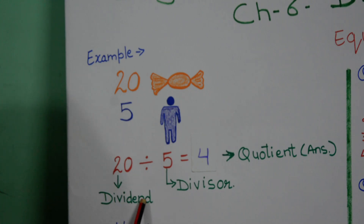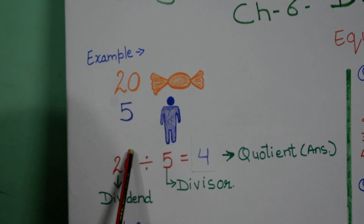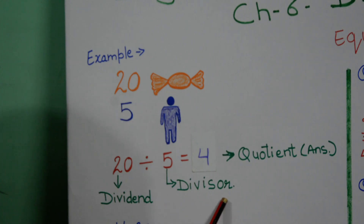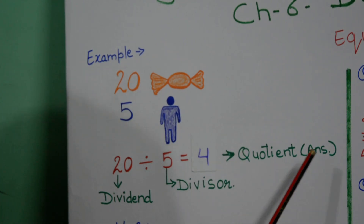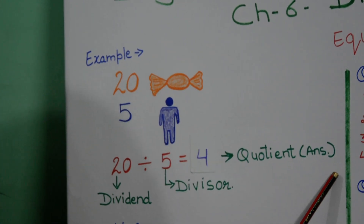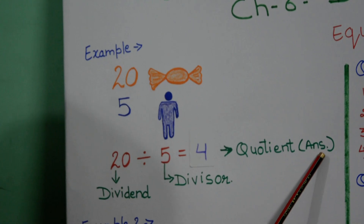They are called dividend because you are dividing them. 5 is the divisor and 4 is your quotient, that is your answer.